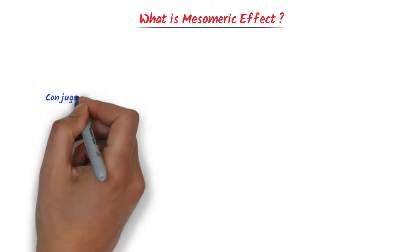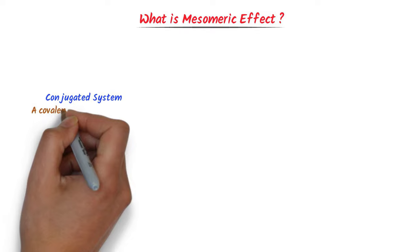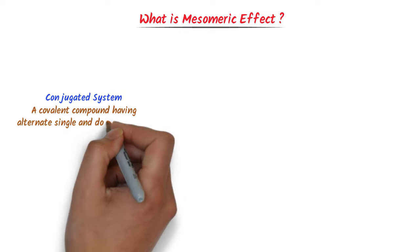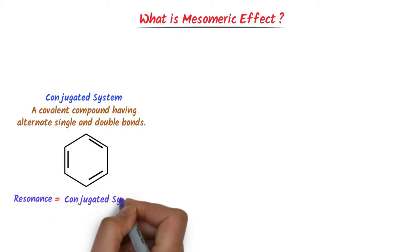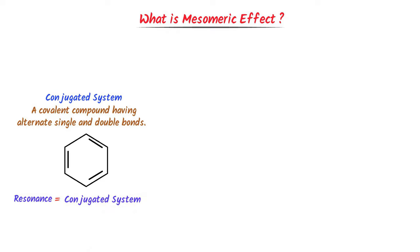Let me quickly teach you conjugated system. A covalent compound which contains alternate single and double bonds is called a conjugated system. Consider this organic compound — there are alternate single and double bonds, so we call this a conjugated system. Remember that for resonance, we need a conjugated system.